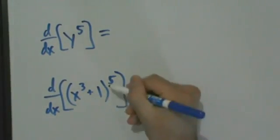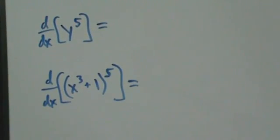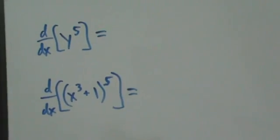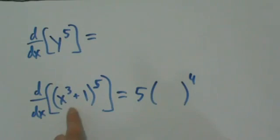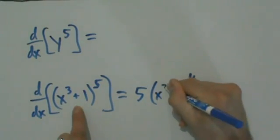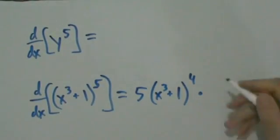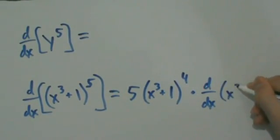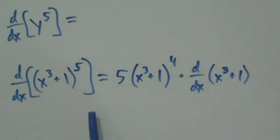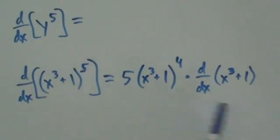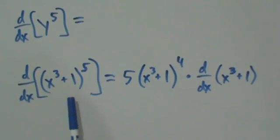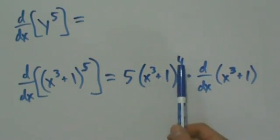This is a function inside of another function, so we're going to use the chain rule. The chain rule says: derivative of the big guy — which is raising things to the fifth — evaluated at the little guy, times the derivative of the little guy. So it's going to be 5 times something to the fourth, where the something is the little guy, x cubed plus 1. Then multiply by d/dx of x cubed plus 1. So d/dx of (x cubed plus 1) to the fifth equals 5 times (x cubed plus 1) to the fourth, times the derivative of x cubed plus 1. That's derivative of the big guy, evaluated at the little guy, multiplied by the derivative of the little guy.